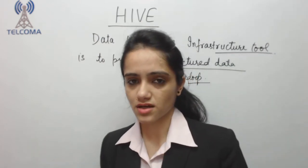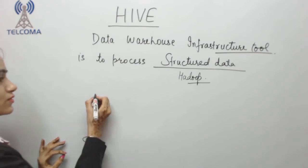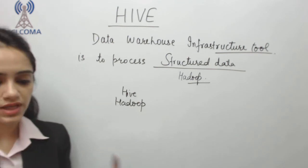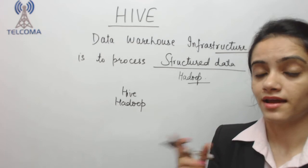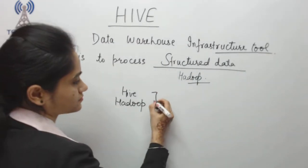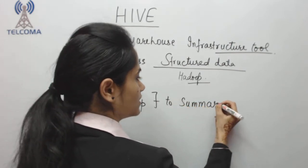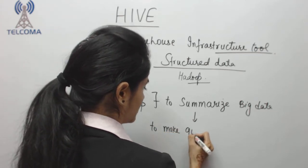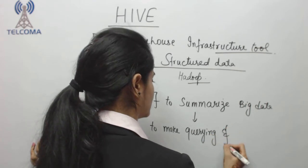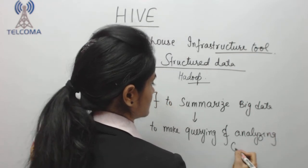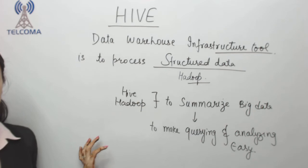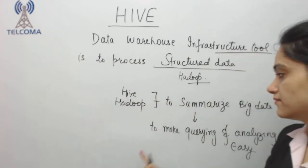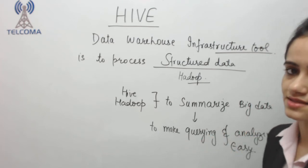Hive resides on top of Hadoop so that we can process various structured data. It resides on top of Hadoop to summarize big data and to make querying and analyzing easy. That is basically the use of Hive — it is built on top of Hadoop so that we can summarize big data and query and analyze data easily.